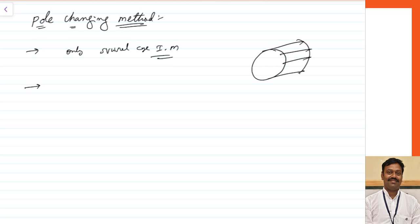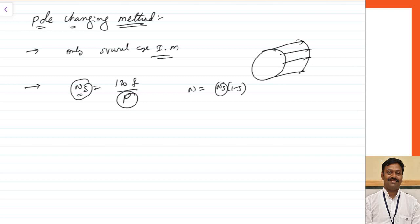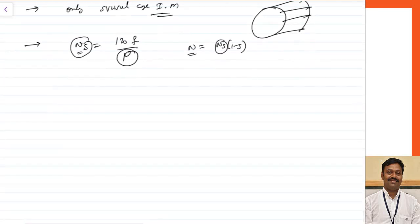In this method, we control speed by changing the number of poles. We know Ns = 120F/P, so by changing the number of poles I am going to change my synchronous speed. When the synchronous speed is changed, since N = Ns(1 - S), as Ns is changed, N will also be changed. This is the basic technique.